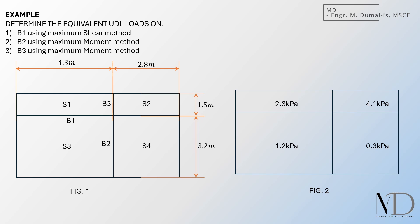Here's the layout of the slab and beams. We have four slabs, S1, S2, S3, and S4, and three labeled beams, B1, B2, and B3. The slabs have different pressure loads, 2.3 kPa, 4.1 kPa, 1.2 kPa, and 0.3 kPa. Our goal is to determine the equivalent UDL loads on beams B1, B2, and B3 using the methods we've discussed.